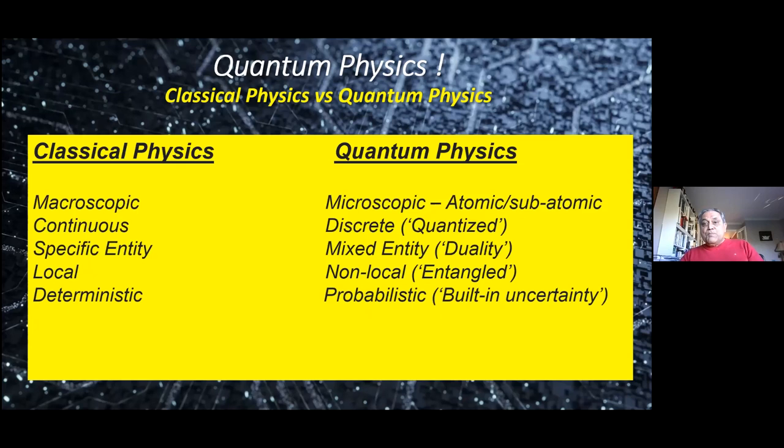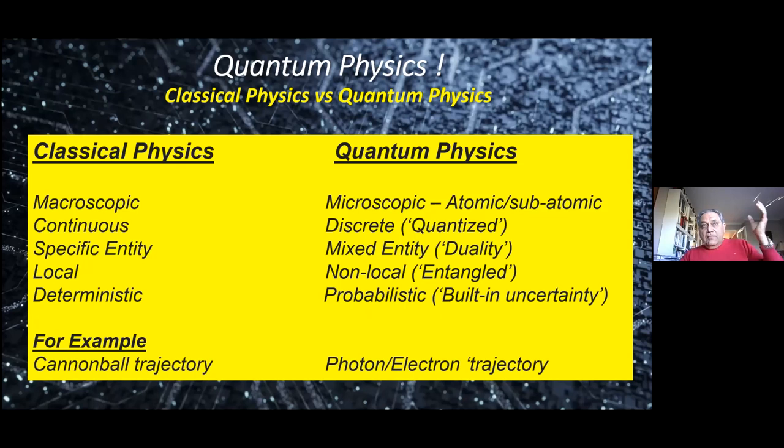Classical physics is local. Quantum physics is non-local. And this is the most strange, bizarre part of quantum physics that is totally counterintuitive. And I'll come to that. I'll spend some time on it. Finally, classical physics is deterministic. Quantum physics is probabilistic. It's got built-in uncertainty. For example, if you were to take a cannonball and shoot it, the first cannonball or the 20th cannonball, if they were shot with exactly the same parameters under exactly the same conditions, they would land in exactly the same place. We expect that. We see that. But that does not happen at the subatomic level if we were to shoot a photon, an electron, with exactly the same initial conditions. They would not end up in the same exact location. They would end up in a distribution that is very accurately predicted by quantum physics, but it's a probability distribution.